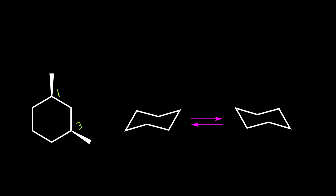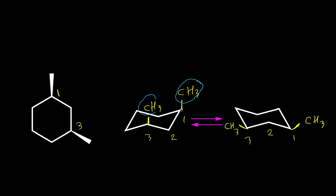So I'm going to put one methyl on axial for carbon one and another methyl on axial for carbon three. When we have ring flip, both of these methyls go to equatorial — one methyl here and one methyl here. Again, in the first structure we have two axial methyls and in the second we have none, so the equatorial-equatorial conformer is more stable.